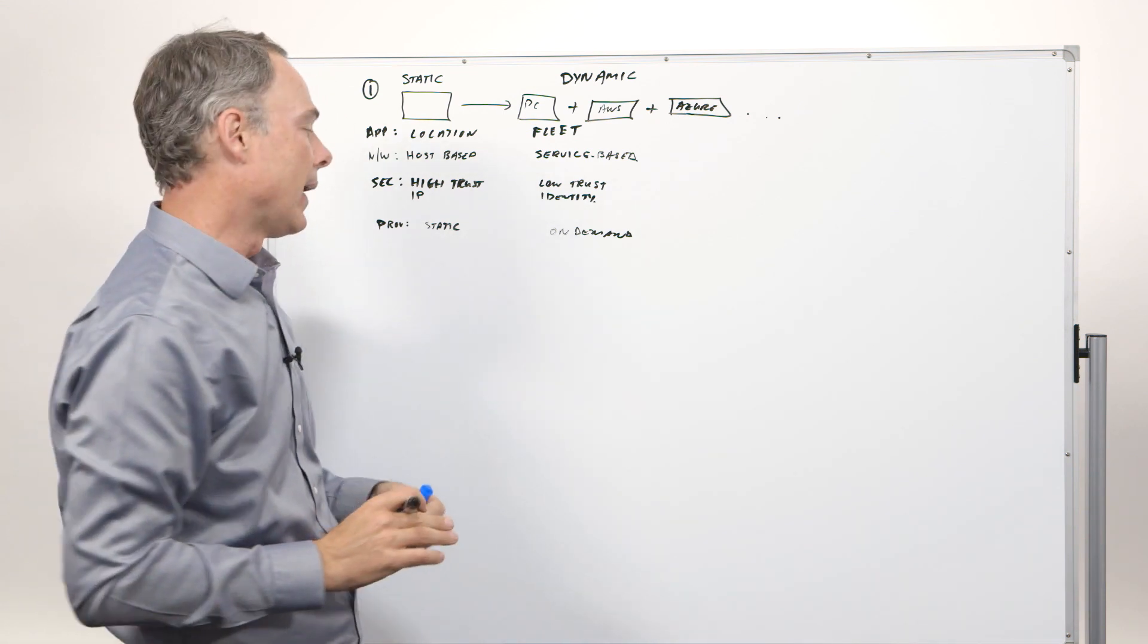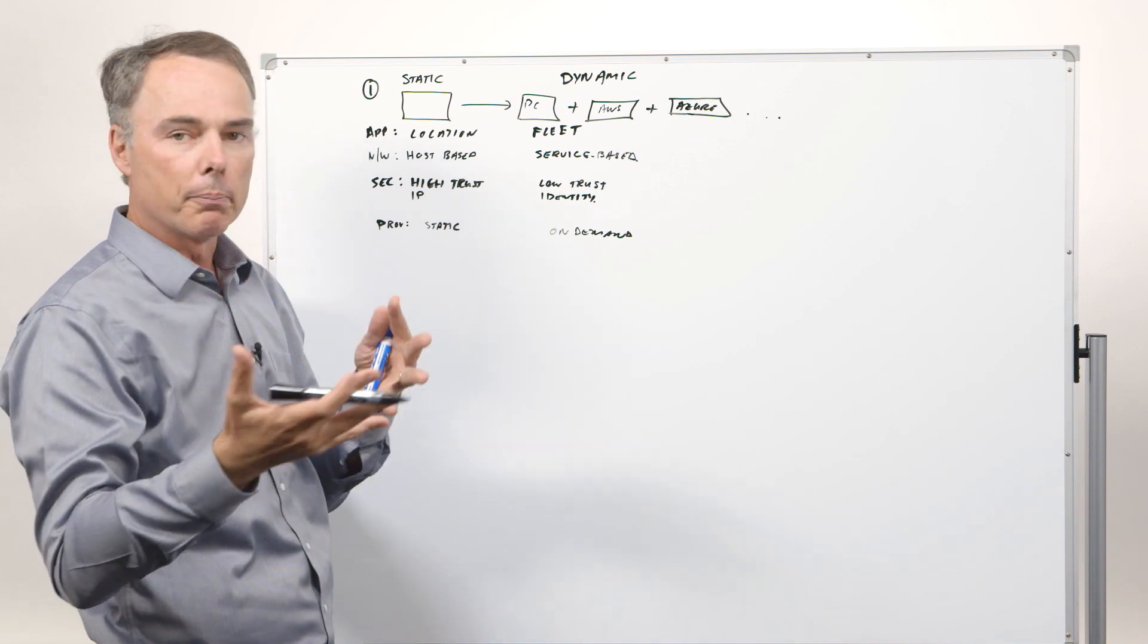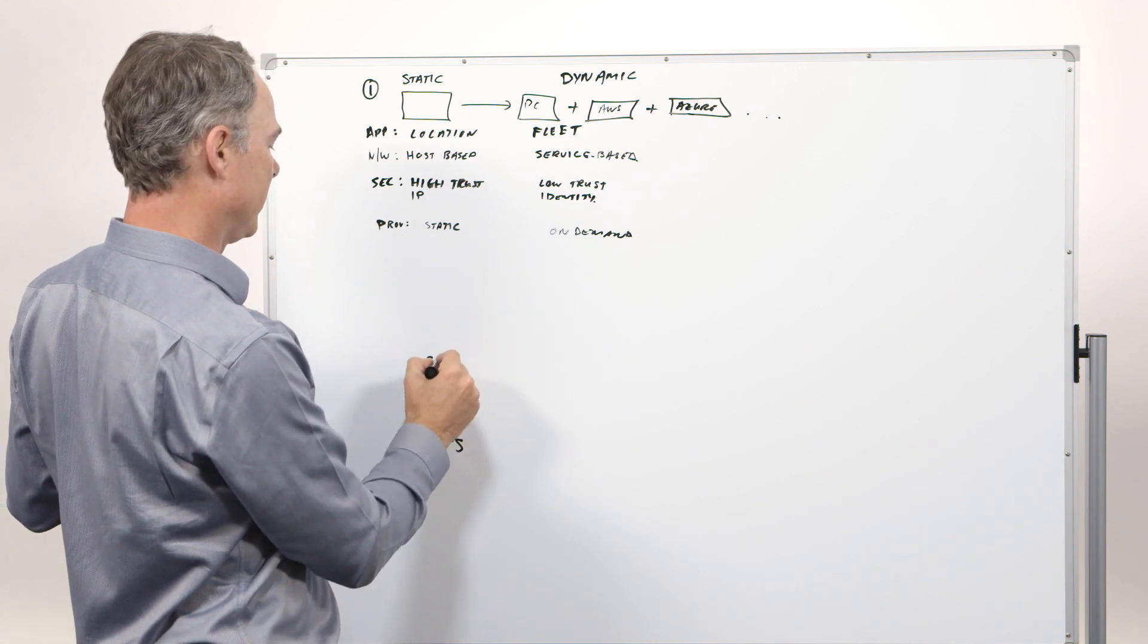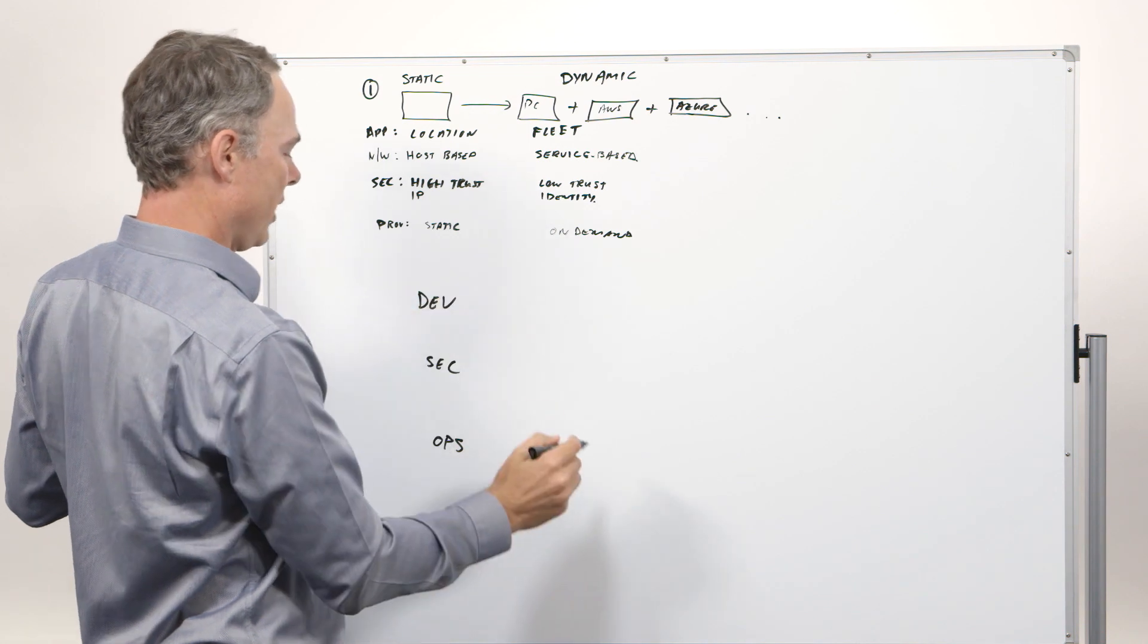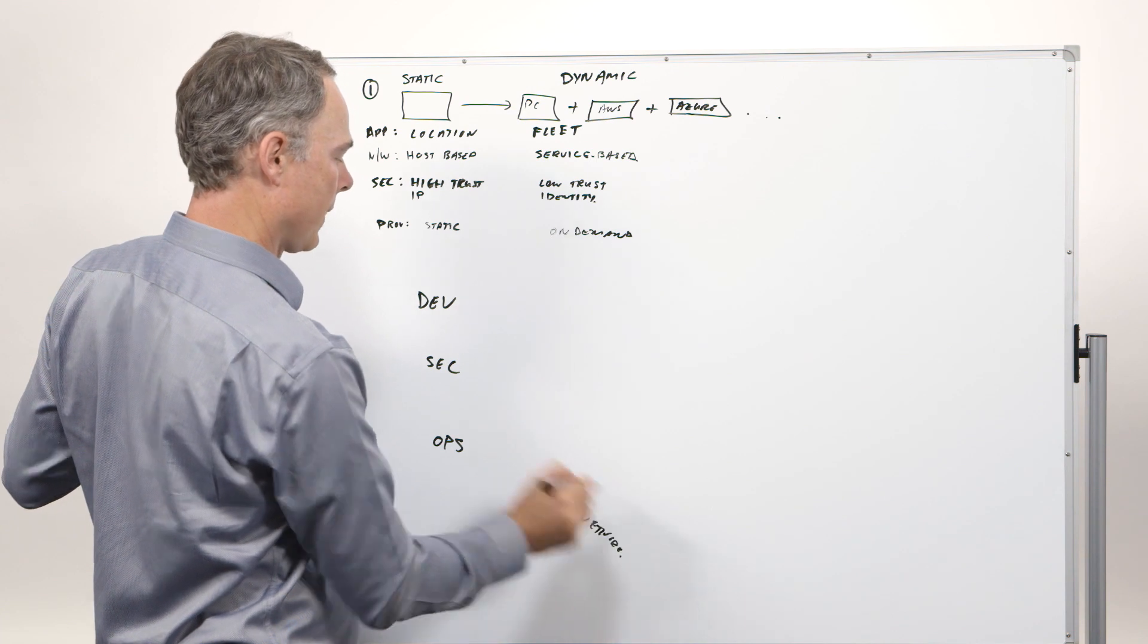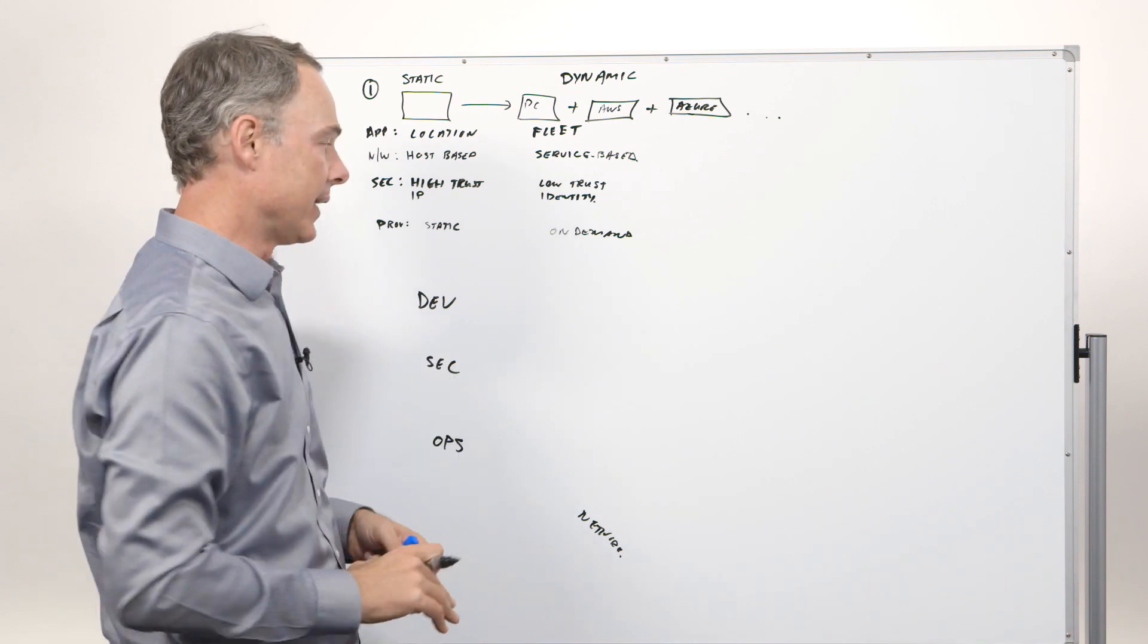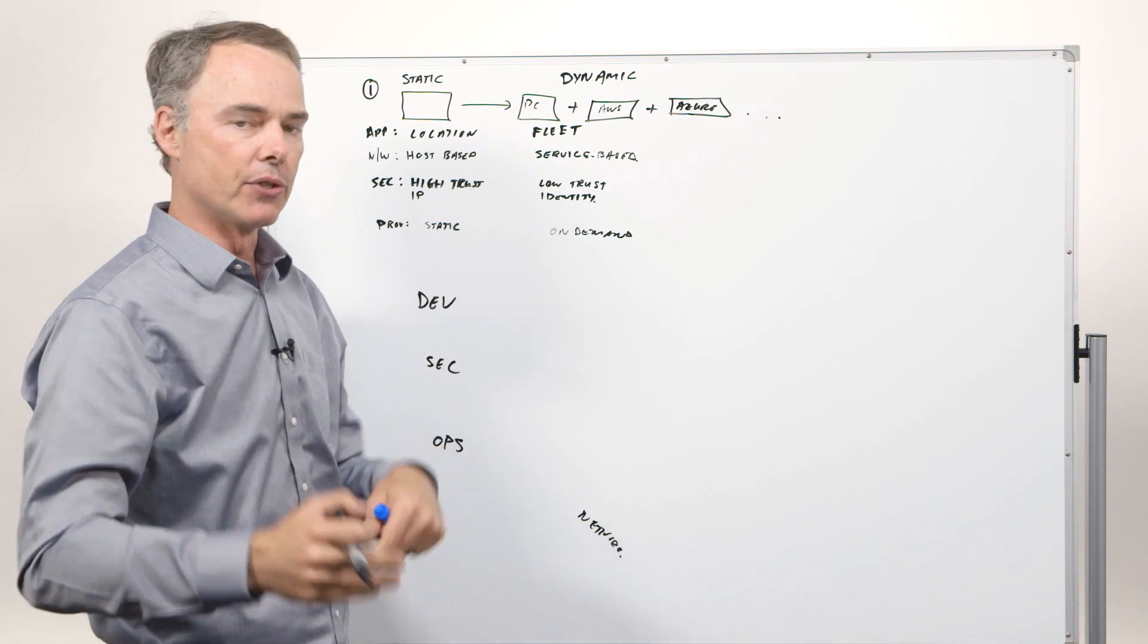How most of our customers think about it is they then decompose the problem into, wait a second, there are four core people in my IT organization. There are ops people. There are security people. There are the development function. And then, there's essentially a networking group. All four people have to figure out how to navigate this transition. And that is the core challenge of cloud adoption at scale is recognizing that all four of them need to understand the implications of this new model.